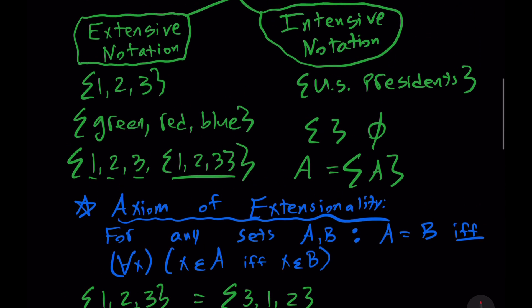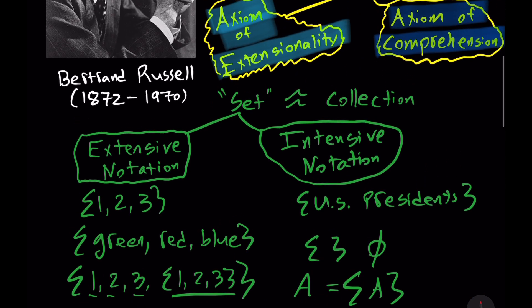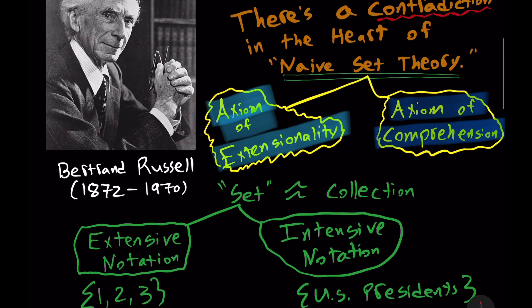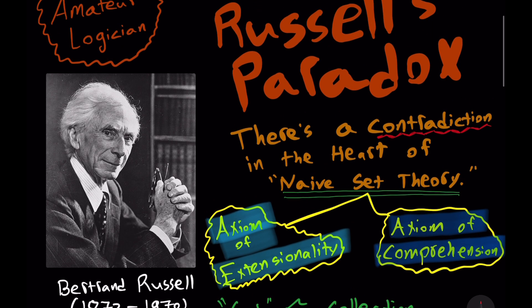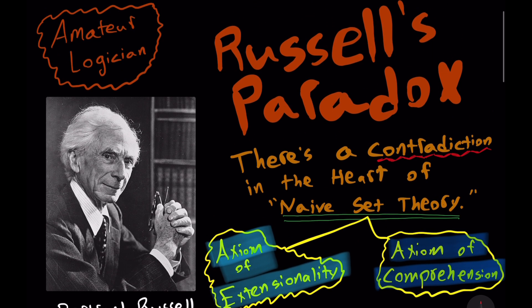I am the Amateur Logician from AmateurLogician.com. This has been an introduction to Russell's paradox. There's a contradiction in the heart of naive set theory. If you like this video, please consider sharing it on social media. I would appreciate it.